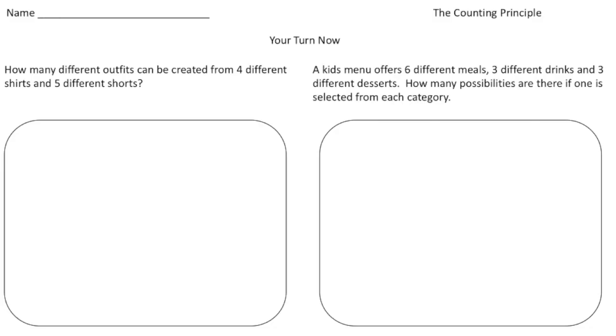All right, welcome back. Let's see how you did with these practice problems. So the first question says, how many different outfits can be created from four different shirts and five different shorts? Well, again, to use the counting principle, all you do is multiply four times five, and we get an answer of 20. So when you have four different shirts and five different pairs of shorts, you actually have 20 different outfits.